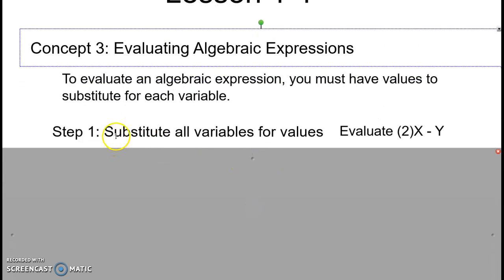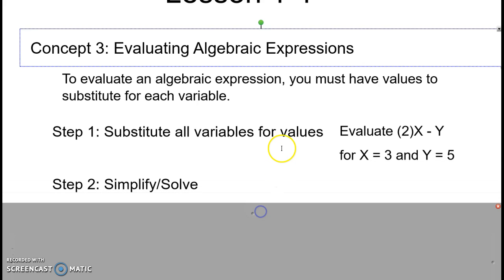The first step is going to be substituting all variables for values. So in a question like 'Evaluate 2 times X minus Y for X equals 3 and Y equals 5,'